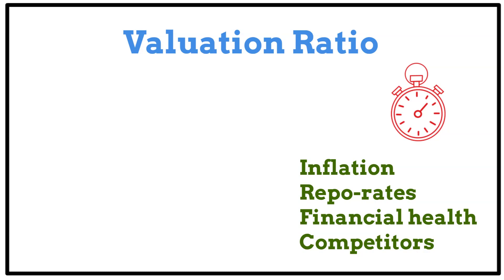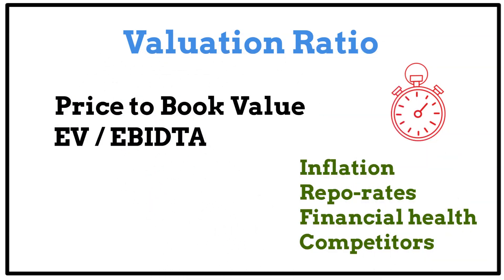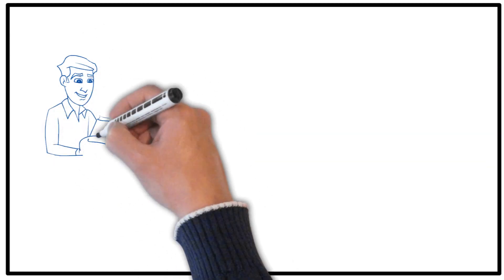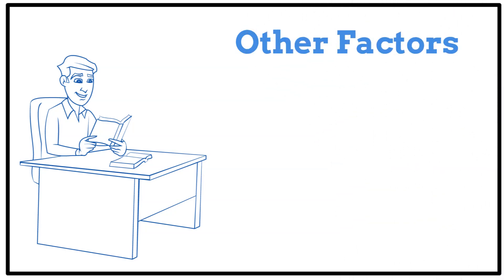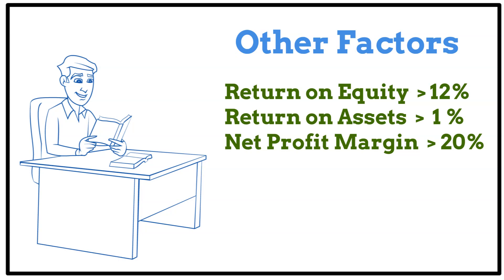Price-to-book value and EV divided by EBITDA are the primary valuation ratios for banks. If we calculate the average value using these metrics, we can buy the stock at fair value. Additionally, the three minor ratios to observe are: Return on Equity greater than 12%, Return on Assets greater than 1%, and Net Profit Margin greater than 20%.